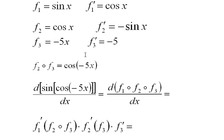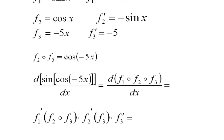Now all I have to do is plug in the right thing. I have to have f prime 1, cosine, and put this inside: cosine of cosine negative 5x. Then I have to have f prime of 2, which is negative sine x with f3 stuck in, and then times f prime 3, negative 5. And that's what I do right here. Here it is all written out.